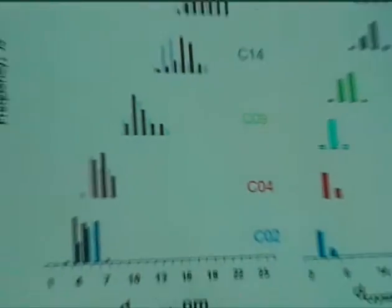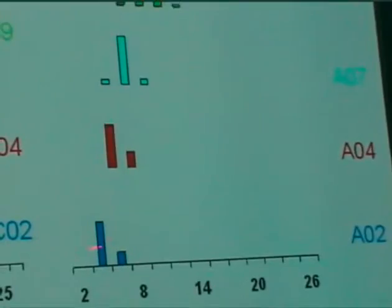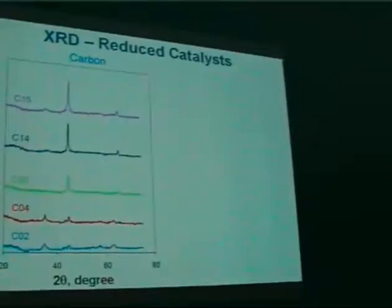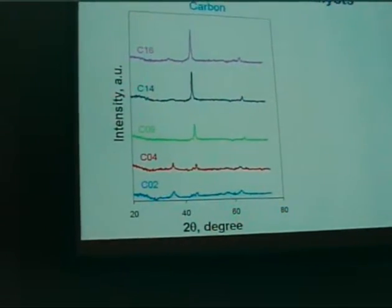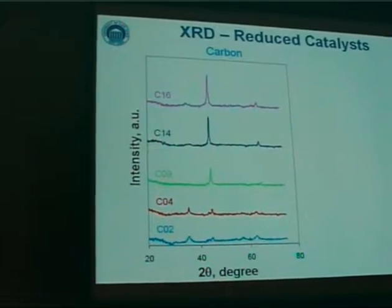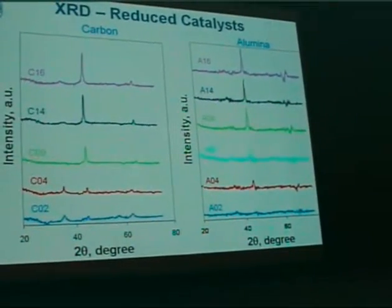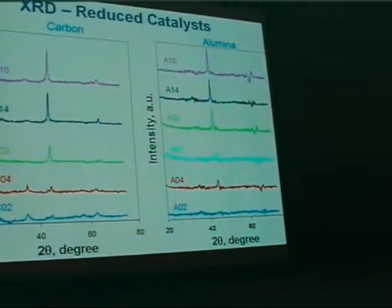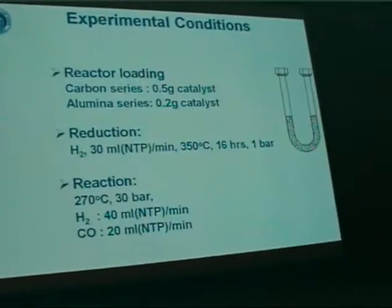The same trends were seen with the alumina series — we have catalysts with crystallite sizes between 3 and 90 nanometers before and after reduction, which are very similar. To confirm this, we did XRD analysis on the reduced and passivated catalysts. For the carbon series, one major peak corresponds to alpha iron, and going from top to bottom we see line broadening corresponding to smaller crystallites. The same applies for the alumina-supported material, again confirming the crystallite size trends from TEM.